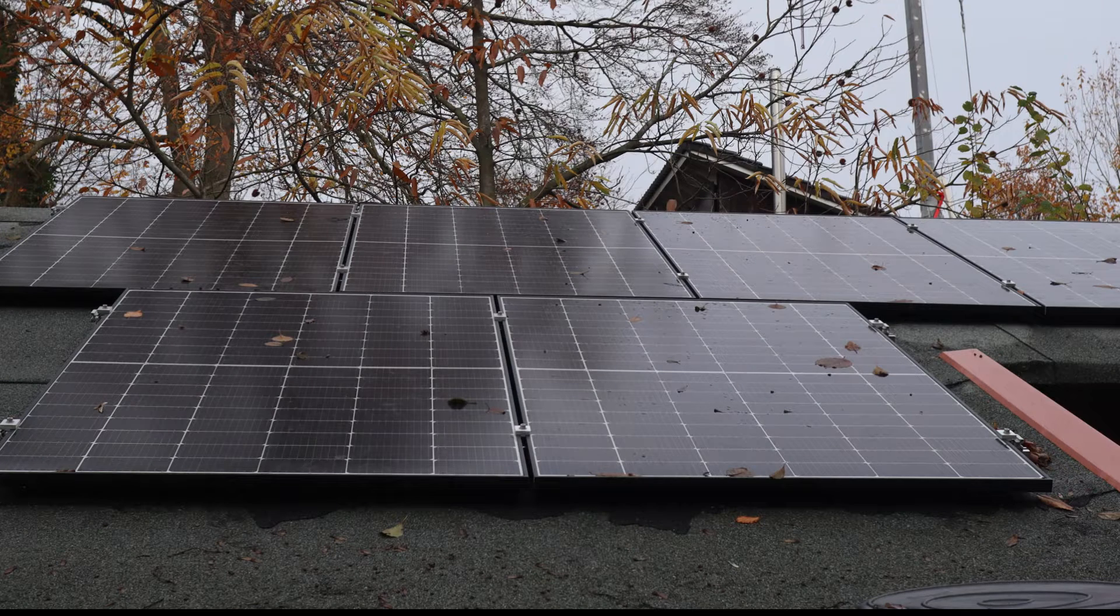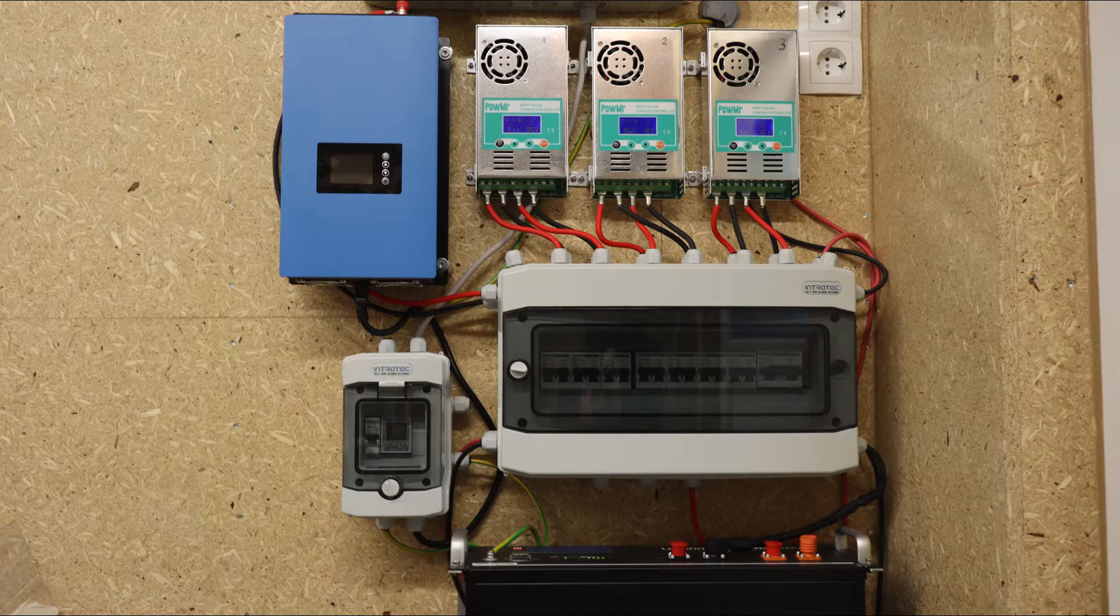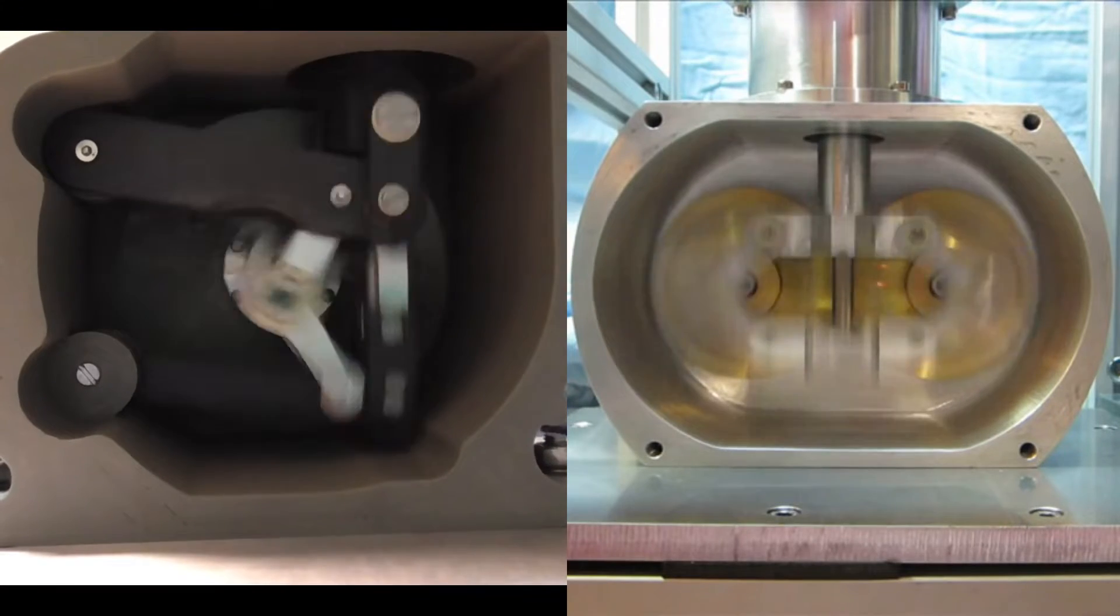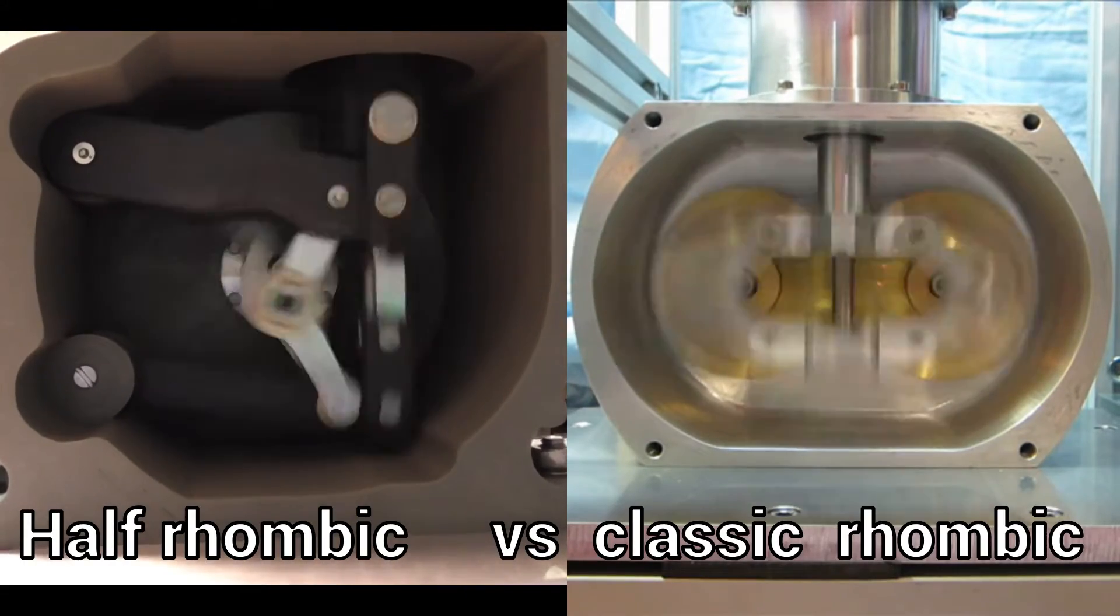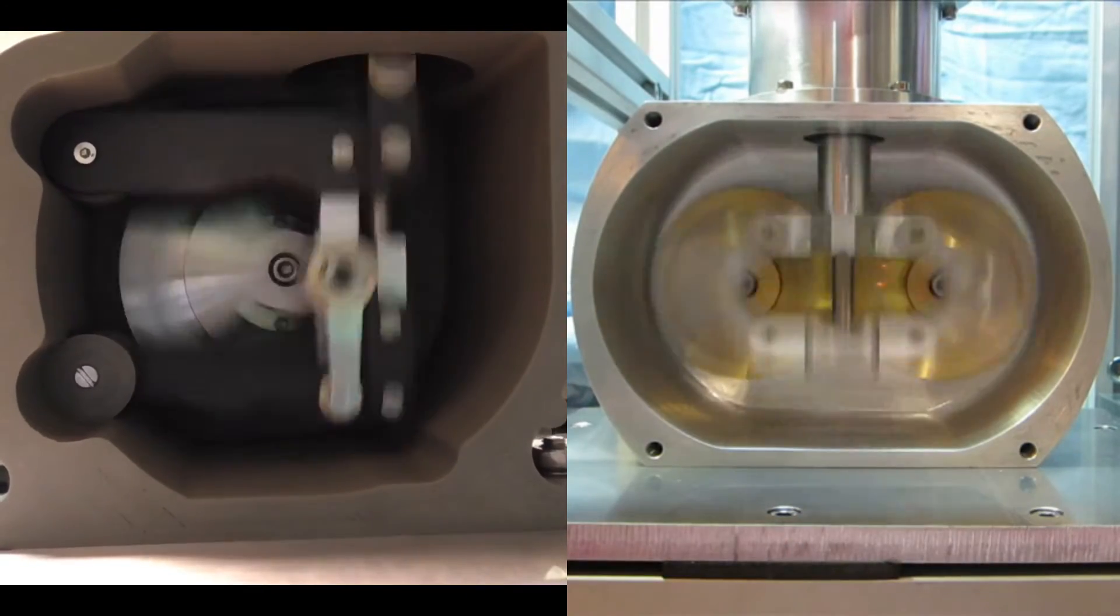I want to discover which configuration is the best to support the energy production for our solar power supply. So I would like to start a serious comparison between the original rhombic drive and the half-rhombic coupling.